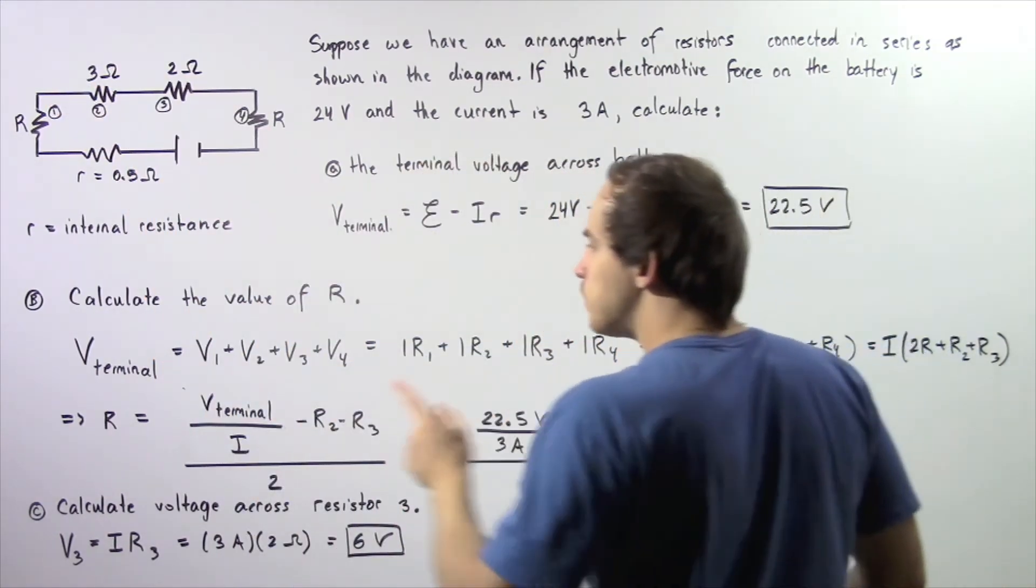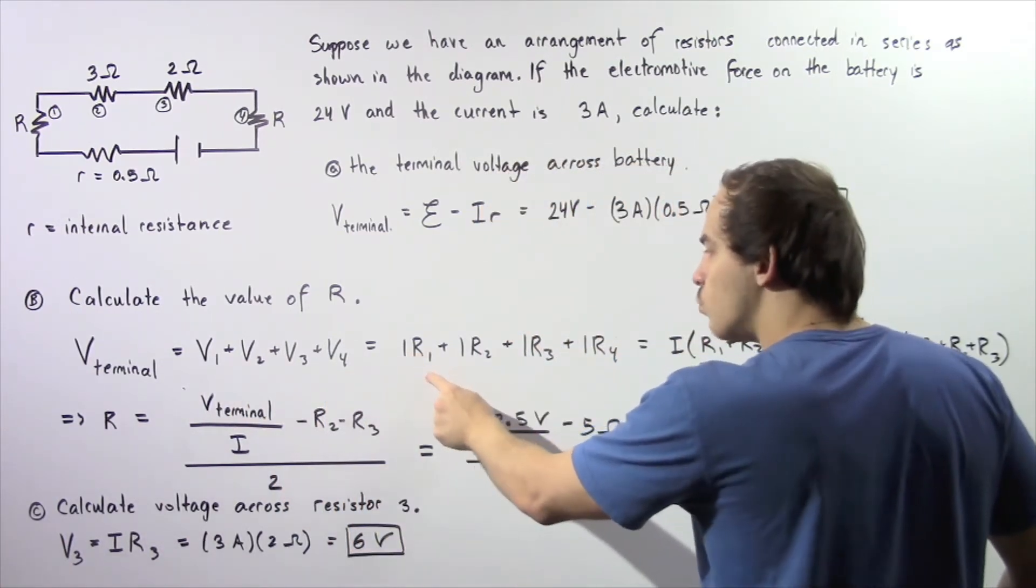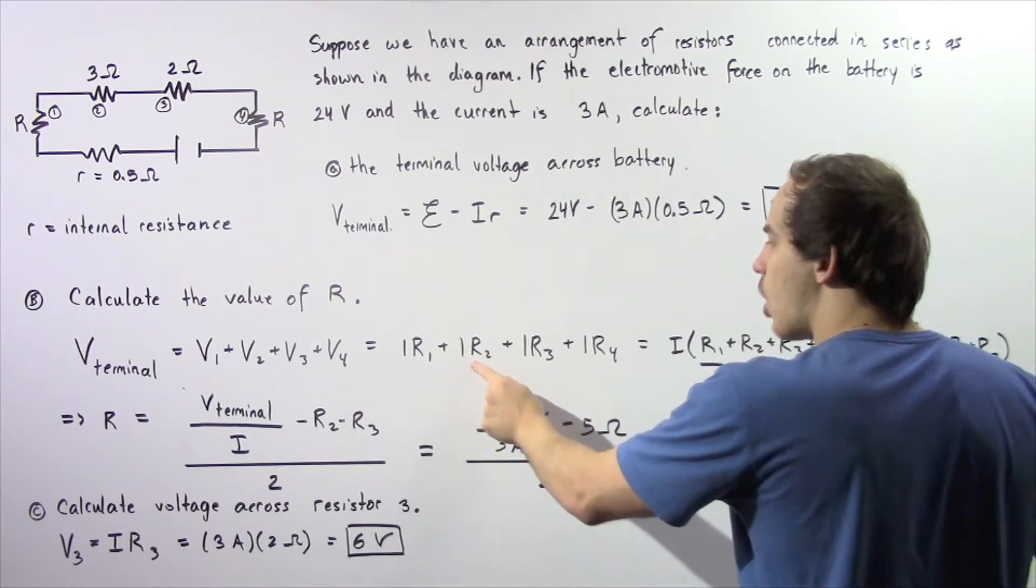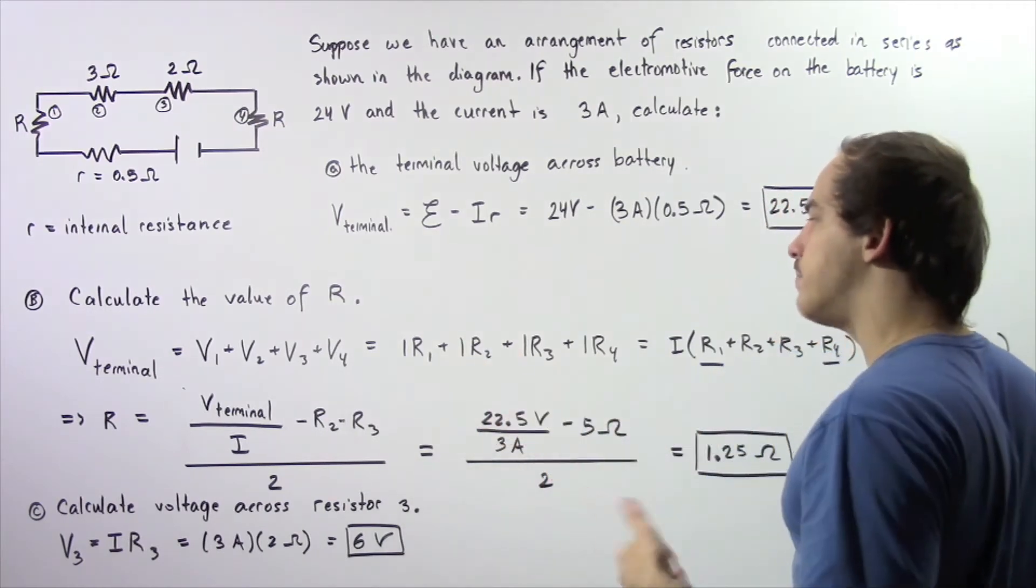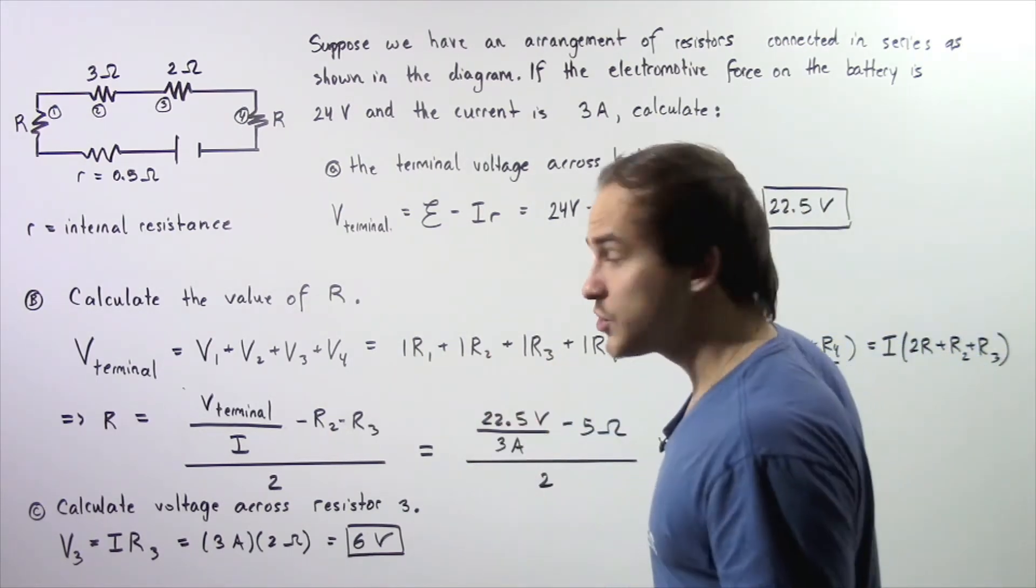So let's replace V1, V2, V3, and V4 with I multiplied by R1 plus I multiplied by R2 plus I multiplied by R3, plus I multiplied by R4. This is simply Ohm's law.